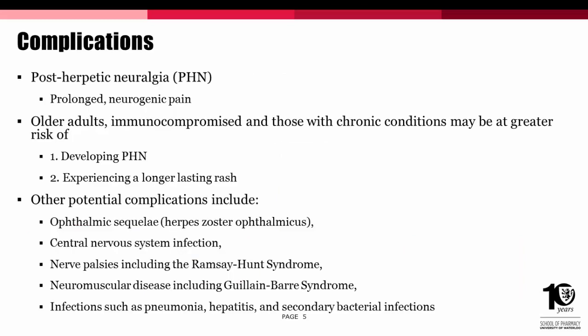Complications from shingles can be severe, with the most frequent being post-herpetic neuralgia, or PHN. Post-herpetic neuralgia is characterized by a prolonged neurogenic pain that is often debilitating and can last for more than 90 days from the onset of the rash. Because PHN can be difficult to treat, it often has major adverse impacts on quality of life. Older adults, those who are immunocompromised, and patients with chronic conditions such as diabetes may be at greater risk of developing post-herpetic neuralgia and are also at risk of experiencing a longer-lasting shingles rash than the general population.